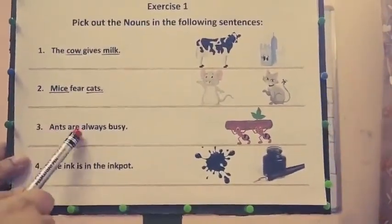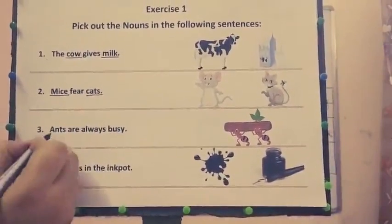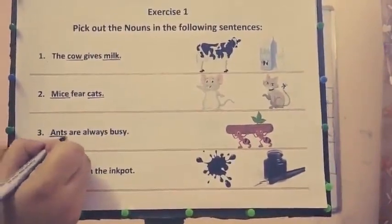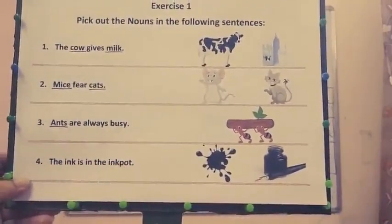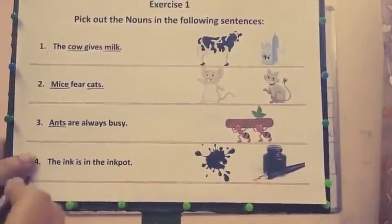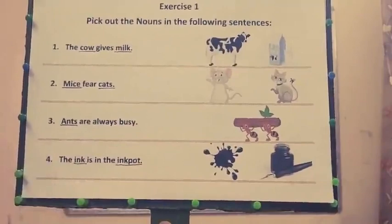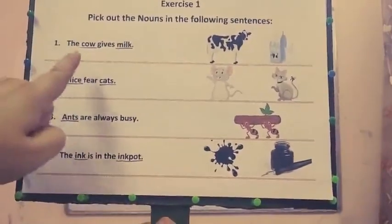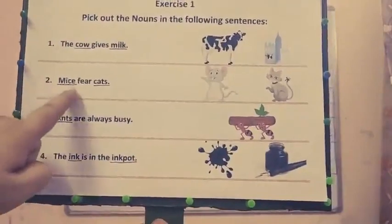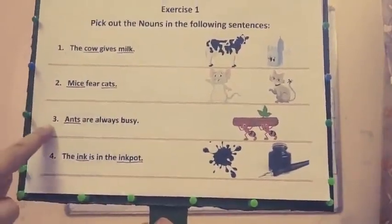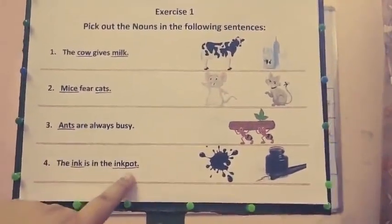Third part: 'Ants are always busy.' The name of the animal is ants. Fourth part: 'The ink is in the ink pot.' Two things: ink and ink pot. To review: first answer is cow and milk, second mice and cats, third ants, fourth ink and ink pot.